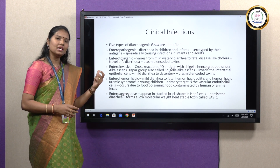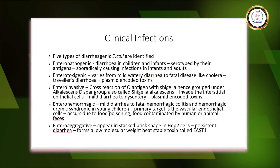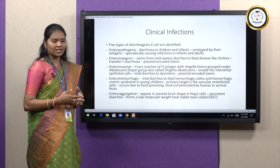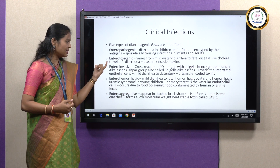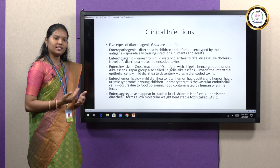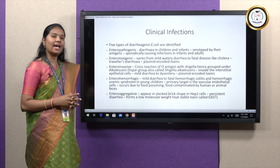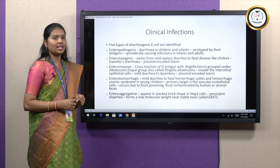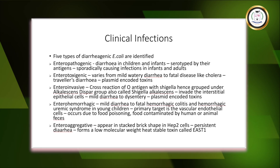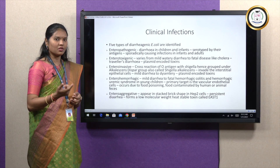Enteroinvasive E. coli has a special affinity towards the intestinal epithelial cells. These were earlier mistaken for Shigella bacilli because they share a common O antigen. Enteroinvasive E. coli and Shigella species shared a common O antigen and showed cross reactions, so they were placed under a special category called the alkalescens-dispar group, and were earlier called Shigella alkalescens. These E. coli are also able to cause mild diarrhea to dysentery, and the toxins produced are completely plasmid encoded.